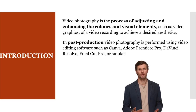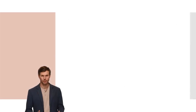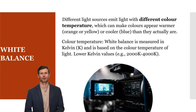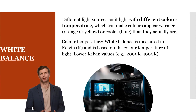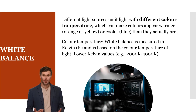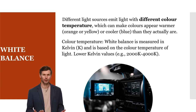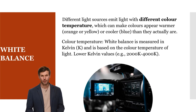Different light sources emit light with different color temperatures, which can make colors appear warmer (orange or yellow) or cooler (blue) than they actually are. White balance adjustment is used for more accurate color representation in videos by neutralizing any color cast caused by specific light conditions. Correct white balance results in more natural-looking and visually appealing videos and contributes to a more pleasant viewing experience.